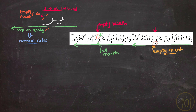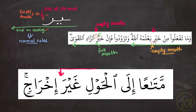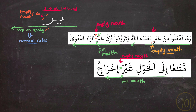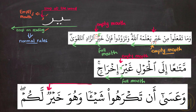Let's look at another example to get this point completely: mata'an ila l-hawli ghayrin — mata'an ila l-hawli ghayra ikhraj. One last example: wa-'asa an takraha shay'an wa-huwa khayrun lakum. So if you stop at a word that ends in ya-ra it will always be empty mouth, but if you keep on going you apply the rules we were just discussing.